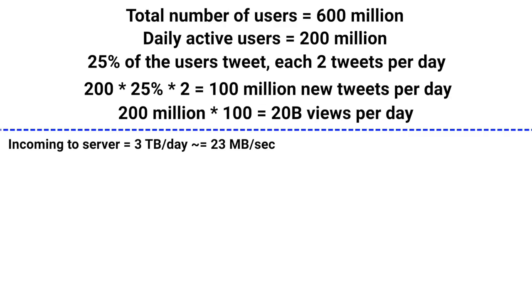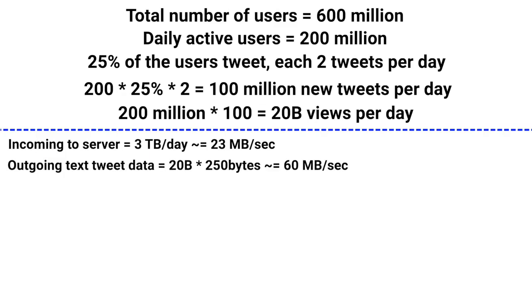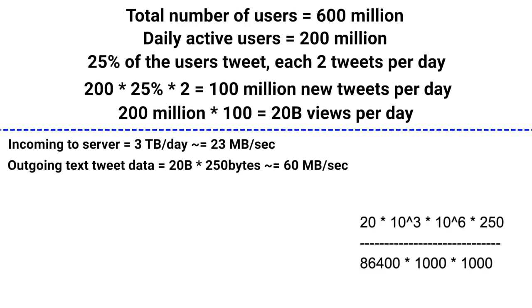Now let's calculate the outgoing data from the server to the client. We have 20 billion tweet views per day and each text tweet takes around 250 bytes. For text: 20 billion × 250 bytes ÷ 86400 ÷ (1000 × 1000) ≈ 58 MB per second, which we can round to 60 MB per second since we are doing estimation.